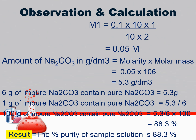After calculating, the M1 value you get is, for example, 0.05 molar. Now find the amount per litre: amount of sodium carbonate in g/dm³ is calculated by multiplying molarity by molar mass — 0.05 × 106 = 5.3 g/dm³. This means 6g of impure sodium carbonate contains 5.3g of pure sodium carbonate. Percentage purity = (5.3 / 6) × 100 = 88.3%. The result: the percentage purity of the sample solution is 88.3%.